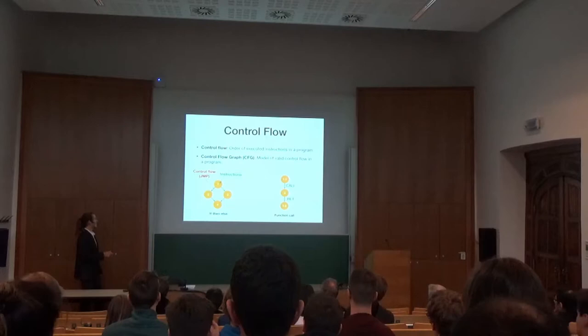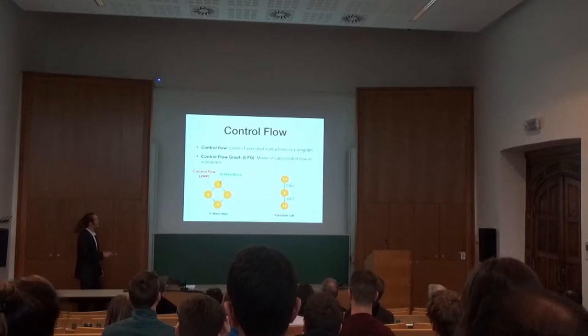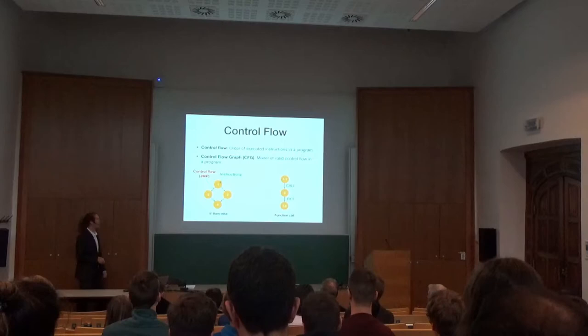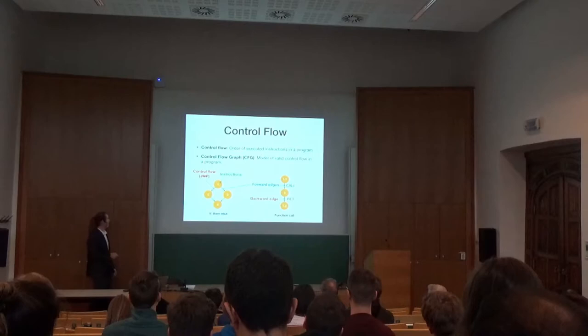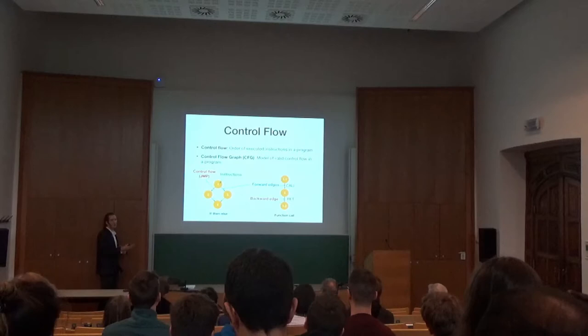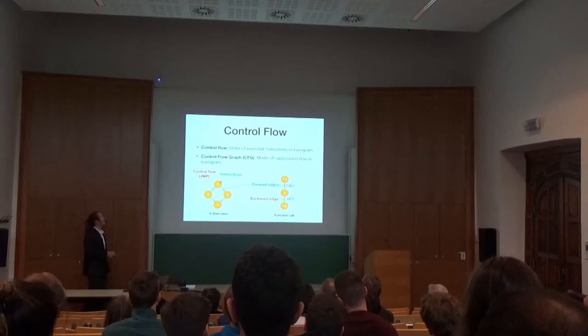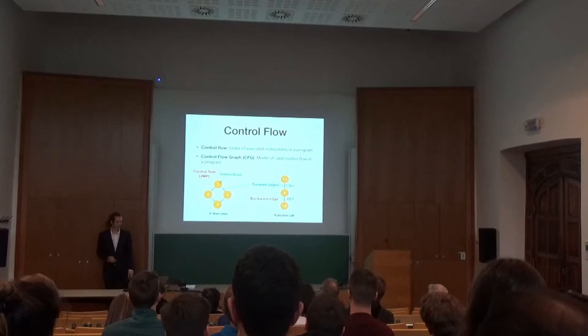Another example: a function call. Here we have node 1.1 using a call instruction to call node number 2. At the end of node number 2, there is a return instruction, and the return instruction causes node number 1.2 to be executed. This gives you the semantics of the normal call and return. We define forward edges as edges which occur due to calls and jumps — two specific types of instructions that alter control flow. And we define backward edges as edges which occur due to returns.